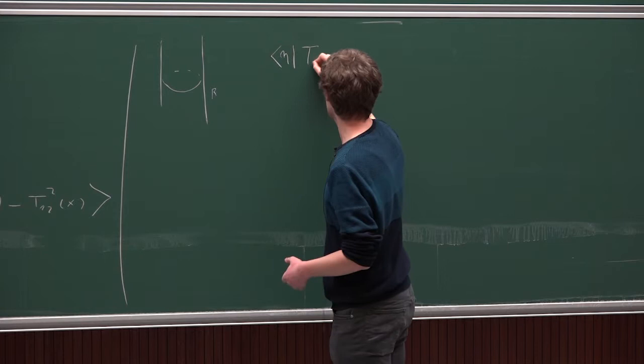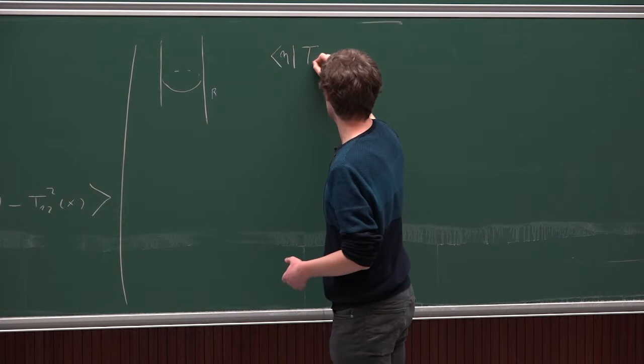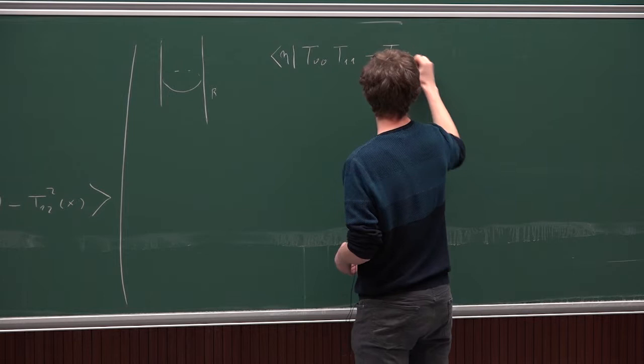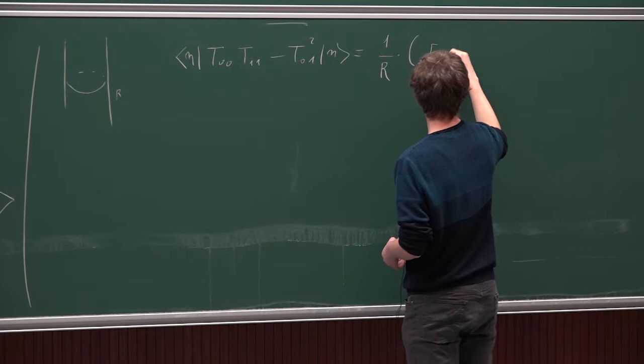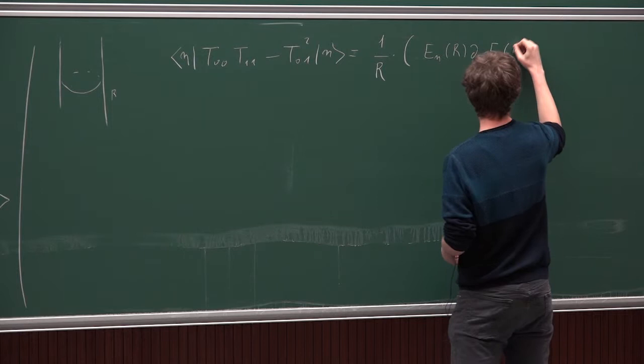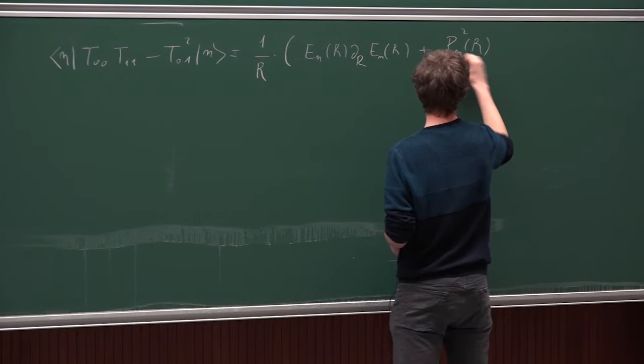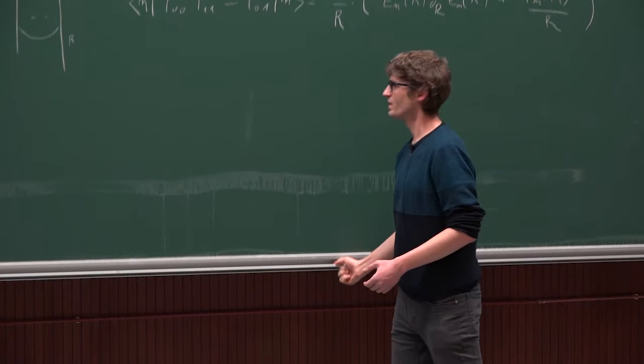And on the cylinder we found a universal formula for the diagonal expectation values of this operator TT bar. Okay, so now we want to deform the theory and draw some consequences.